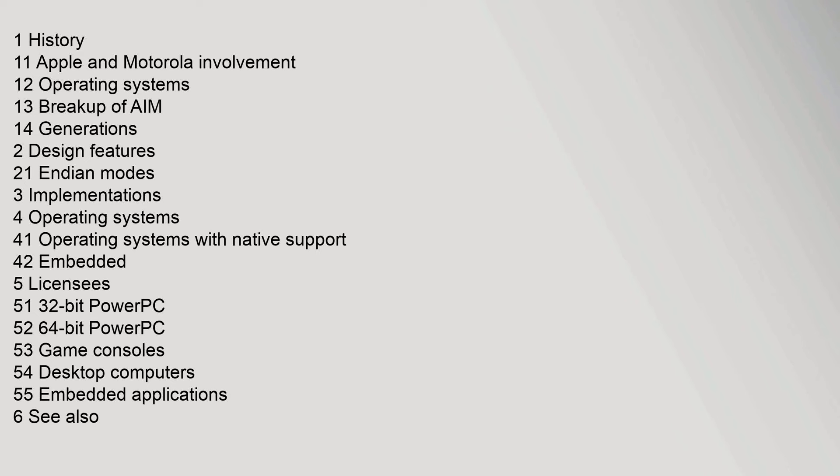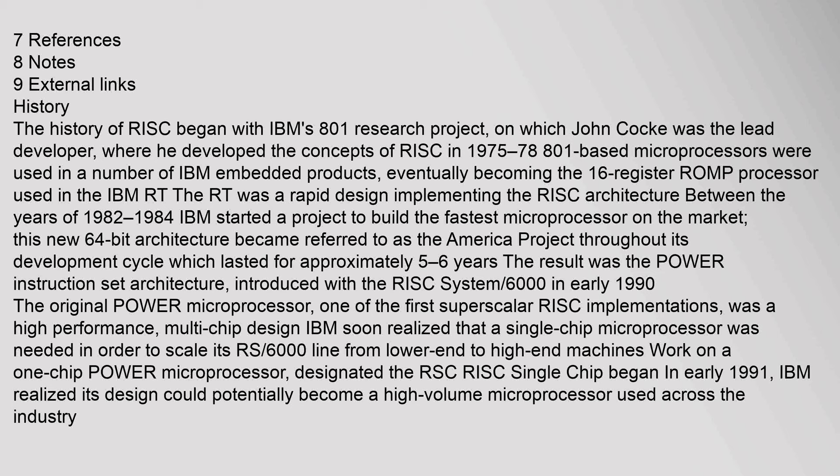The history of RISC began with IBM's 801 research project, on which John Cocke was the lead developer, where he developed the concepts of RISC in 1975 to 1978. 801-based microprocessors were used in a number of IBM embedded products, eventually becoming the 16-register ROMP processor used in the IBM RT. The RT was a rapid design implementing the RISC architecture between the years of 1982 to 1984.